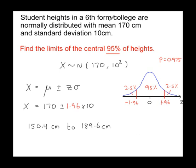So for this population, which has a population mean of 170 centimeters and a standard deviation of 10 centimeters, 95% of all heights of students will lie in the interval 150.4 centimeters to 189.6 centimeters.